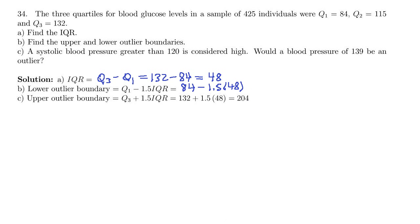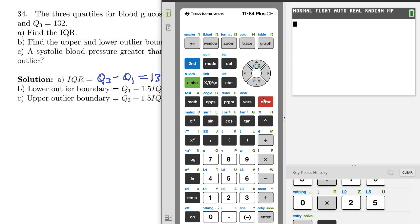Let's go ahead and compute that. So 84 minus 1.5 times 48 is 12.